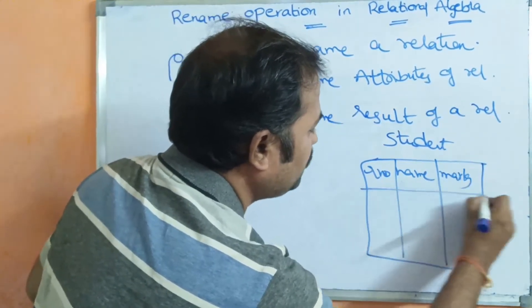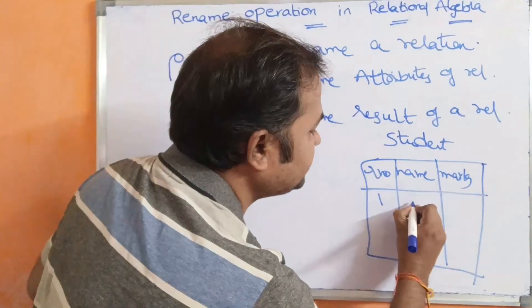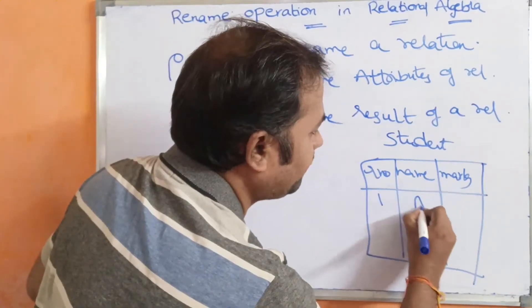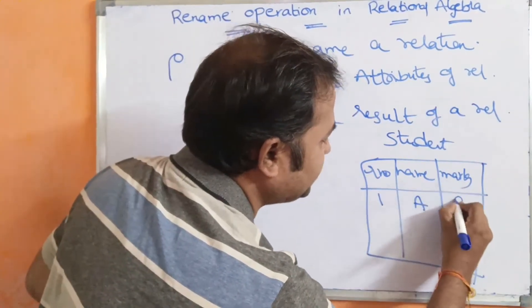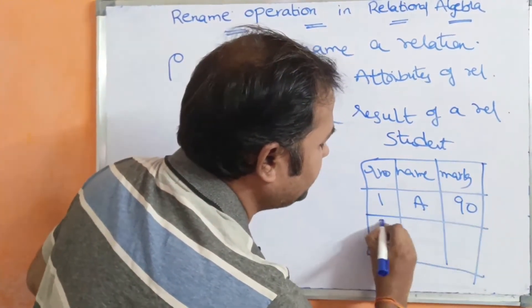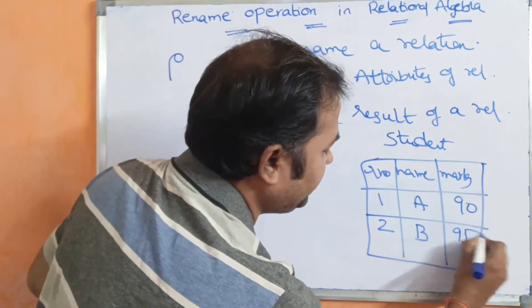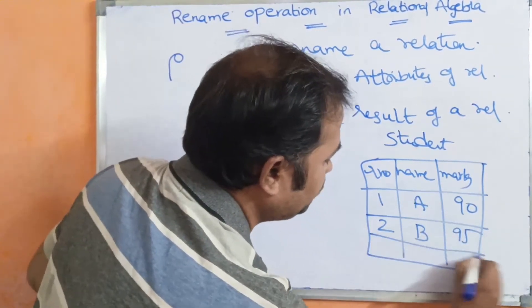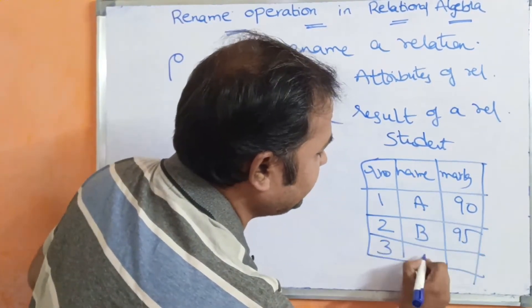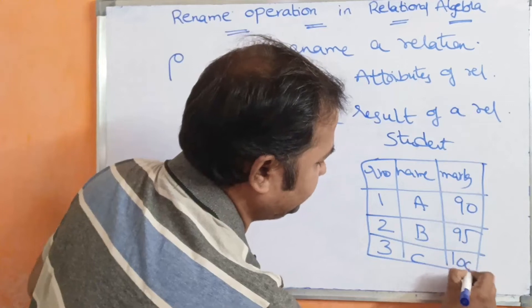The student table has the following data: roll number 1, name A, marks 90; roll number 2, name B, marks 95; roll number 3, name C, marks 100.